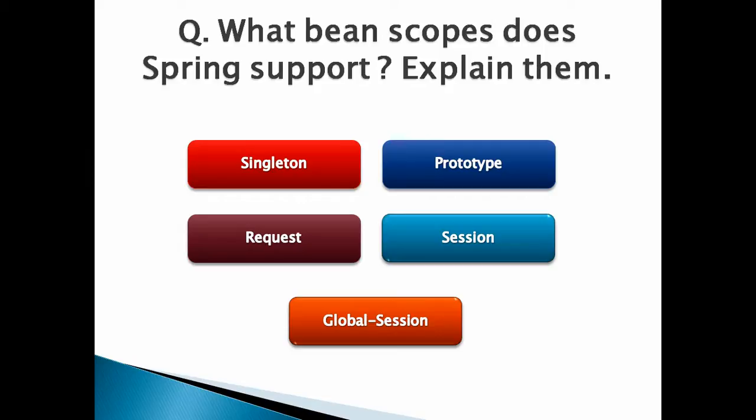Number 2, Prototype Bean Scope. Whenever a bean is declared as prototype, it scopes a single bean definition to any number of object instances. It is just the opposite of singleton bean scope. Each time a bean is requested, a new instance gets created.